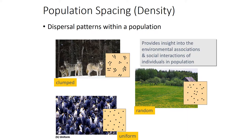Let's look at population spacing — how we often find animals or plants dispersed in the environment. There are three basic patterns: clumped, random, and uniform. When we look at how these organisms are spaced, it provides insight into environmental conditions. What do you think would cause clumping? And what might cause individuals within a population to be spaced uniformly from each other?